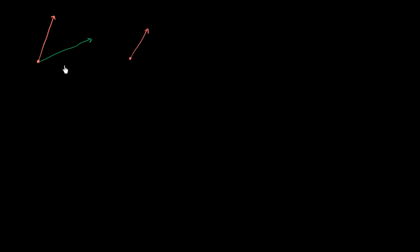Now we also know that not all angles seem the same. For example, this is one angle here, and then we could have another angle that looks something like this. Viewed this way, it looks like this one is much more open, and this one right over here seems less open.